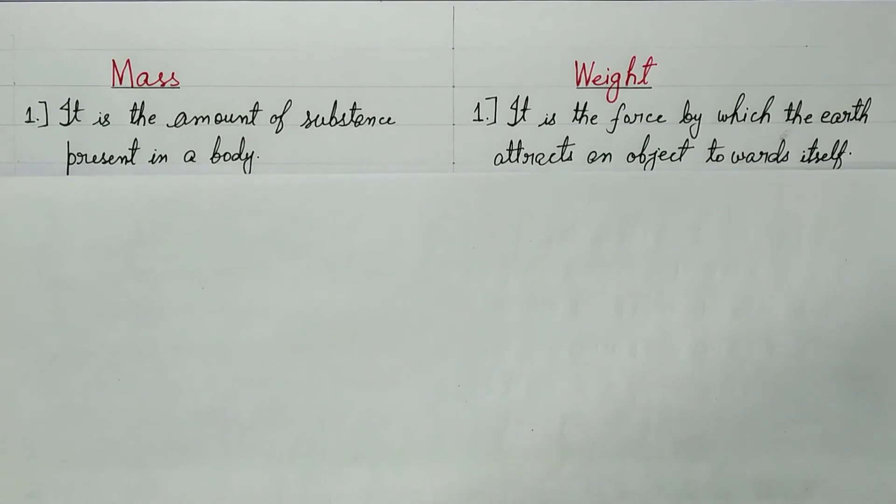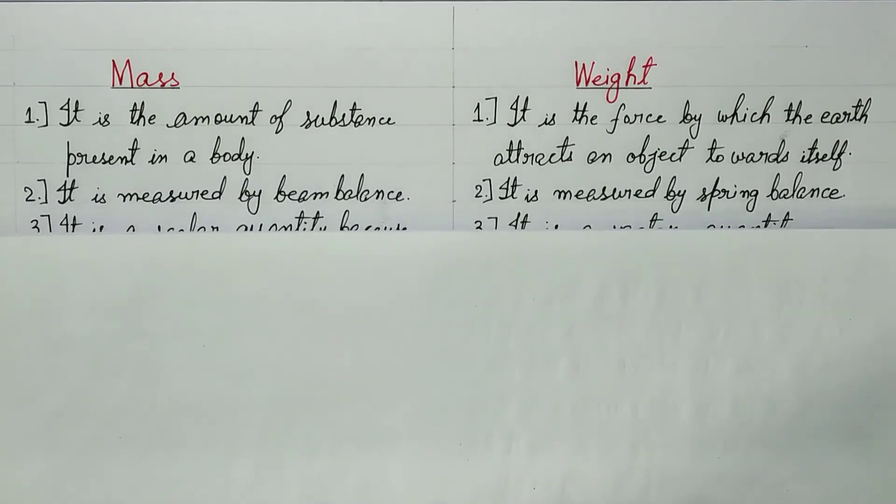Second difference. Mass is measured by beam balance. Weight is measured by spring balance.